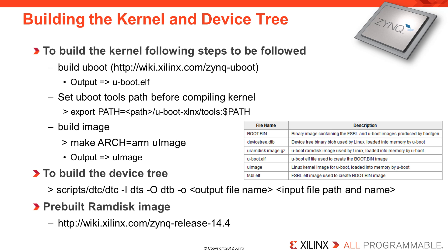SDK's bootgen tool will create the boot.bin image using the fsbl.elf and uBoot image. The build image process creates files named image, zimage, and uimage located in the arch/arm/boot directory of the kernel tree. The image file is a non-compressed kernel image. The zimage file is a compressed kernel image which will uncompress itself when it starts. The uimage file is a kernel image wrapped in a uBoot mkimage wrapper, such that the bootm command in uBoot can be used. This is why we need to add uBoot/tools to the path before compiling Linux.